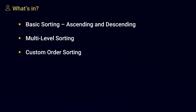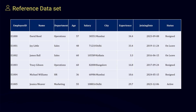We will understand these concepts using an employee dataset of a company. The fields include employee ID, employee name, department, age, salary, city where the employee is working, experience, joining date, and status. Status categories include resigned, notice period, on leave, and active — where active employees are currently working and present in the office.